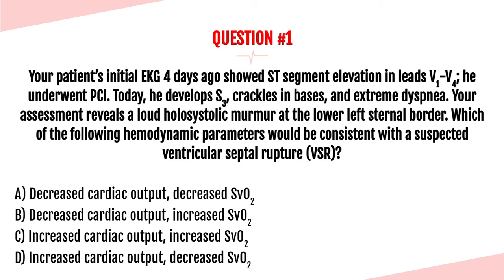Question number one. Your patient's initial EKG four days ago showed ST segment elevation in leads V1 through V4. He underwent PCI. Today he develops an S3 heart sound, crackles in the bases, and extreme dyspnea. Your assessment reveals a loud holosystolic murmur at the lower left sternal border. Which of the following hemodynamic parameters would be consistent with a suspected ventricular septal rupture? A, decreased cardiac output and decreased SVO2? B, decreased cardiac output and increased SVO2? C, increased cardiac output and increased SVO2? Or D, increased cardiac output and decreased SVO2?